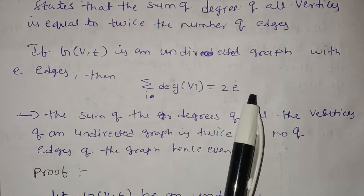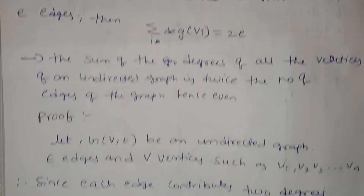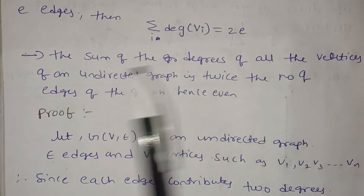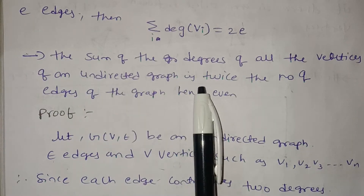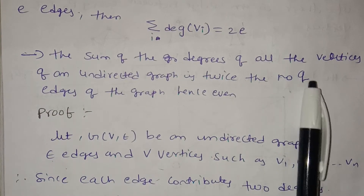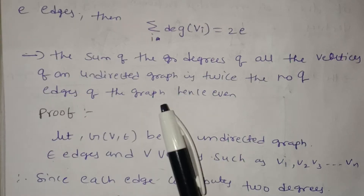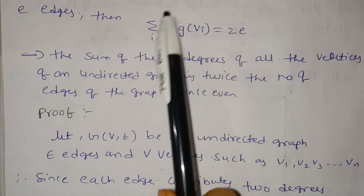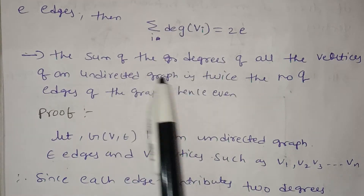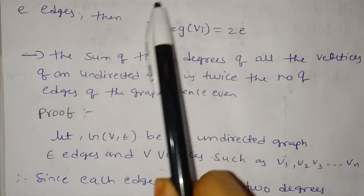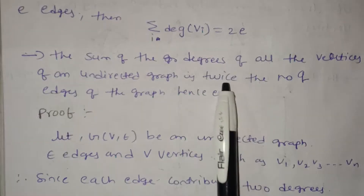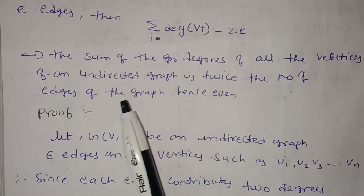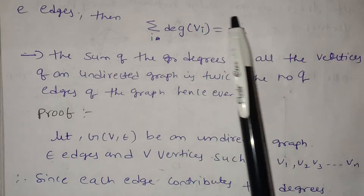The sum of the degrees of all vertices of an undirected graph is twice the number of edges of the graph, and this sum is even.